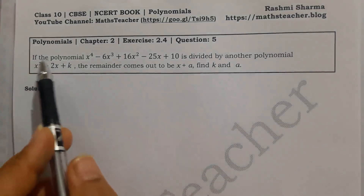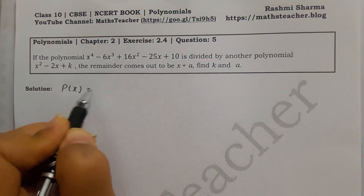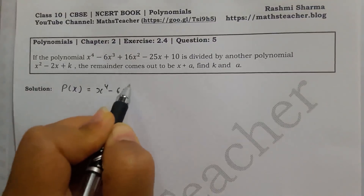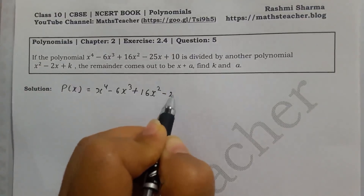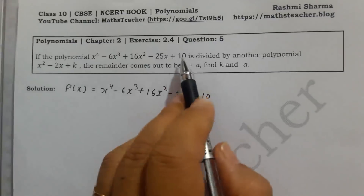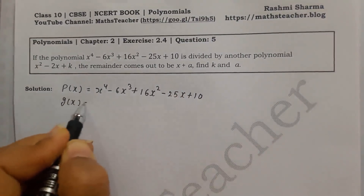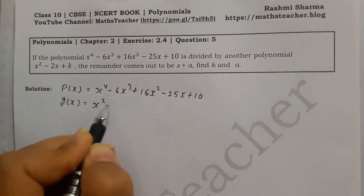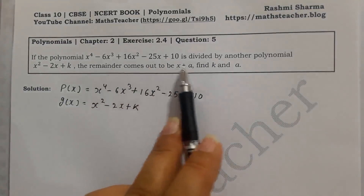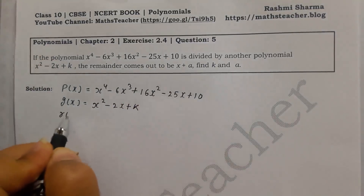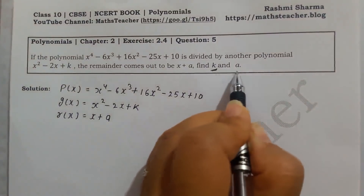The question is: let the polynomial p(x) equal x⁴ minus 6x³ plus 16x² minus 25x plus 10. This is divided by another polynomial g(x), where g(x) equals x² minus 2x plus k. The remainder comes out to be x plus a. Find the value of k and a.